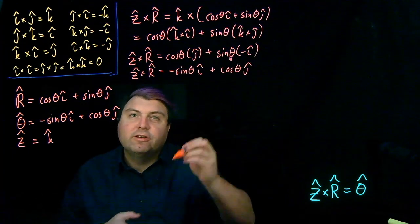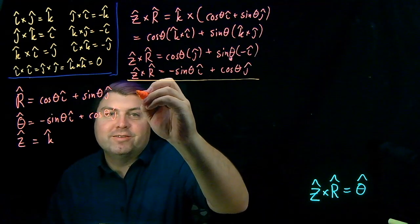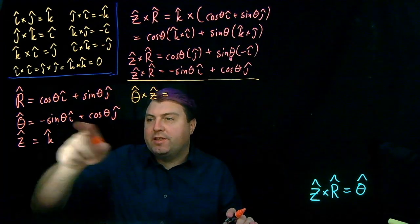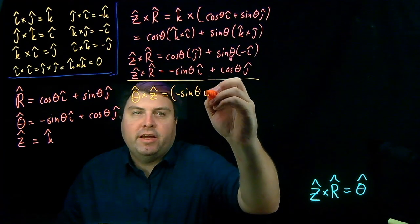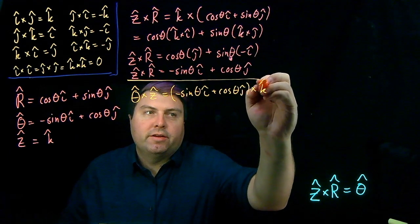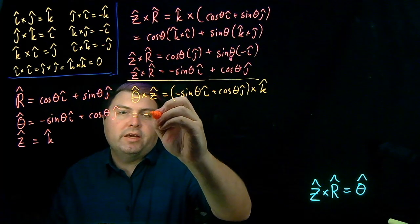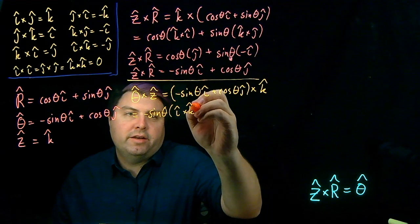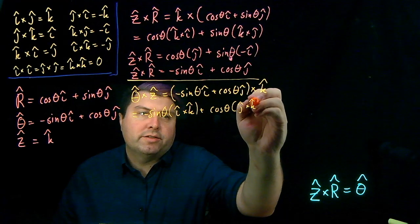Let's try another one: θ̂ × Ẑ. Every time I see θ̂ I replace it with −sinθ î + cosθ ĵ, and then cross it with K̂, because K̂ and Ẑ are the same thing. So I get −sinθ (î × K̂) + cosθ (ĵ × K̂).